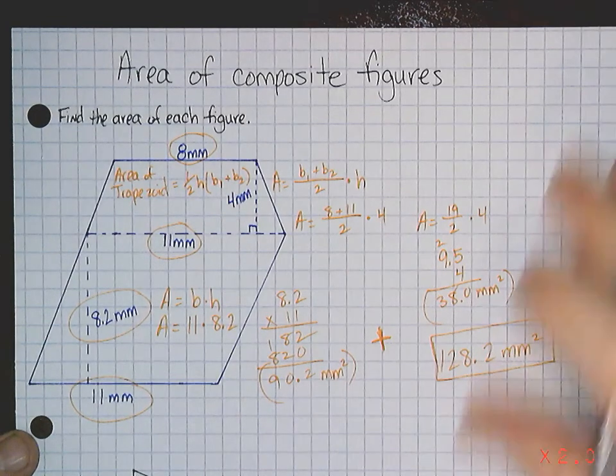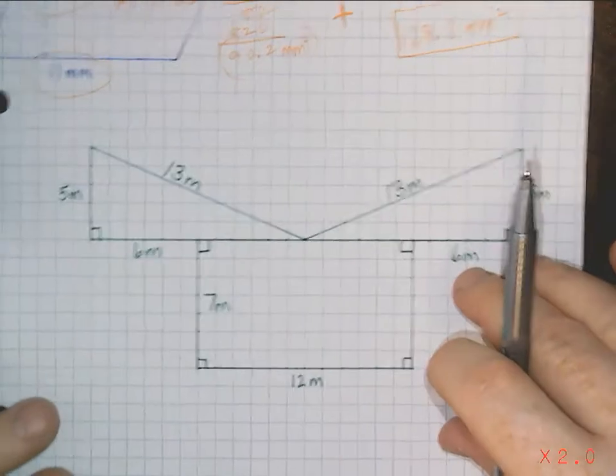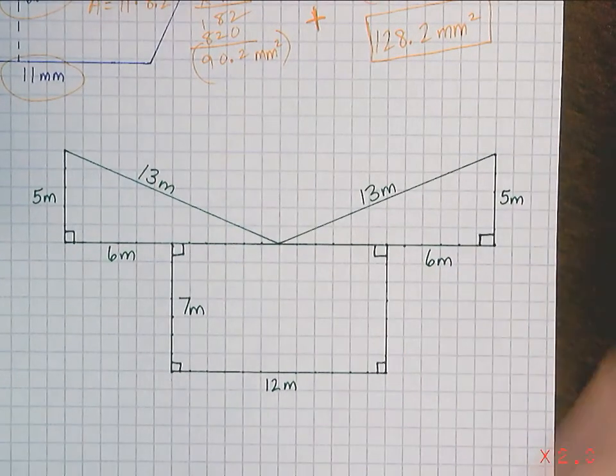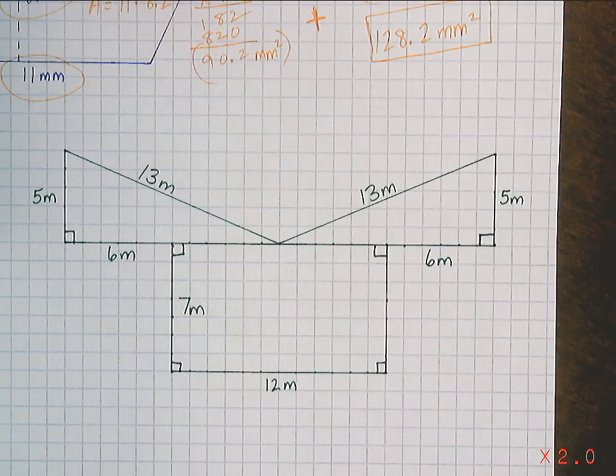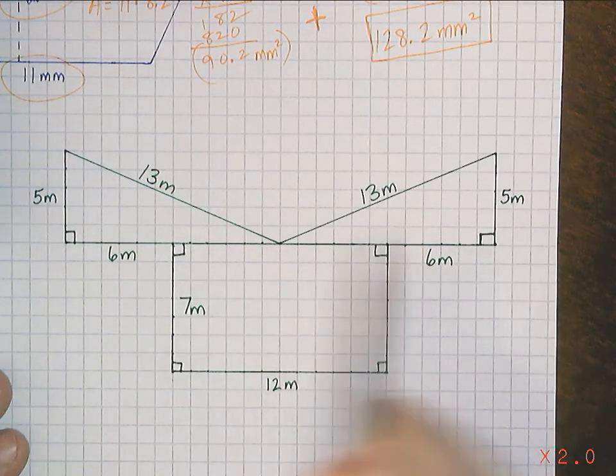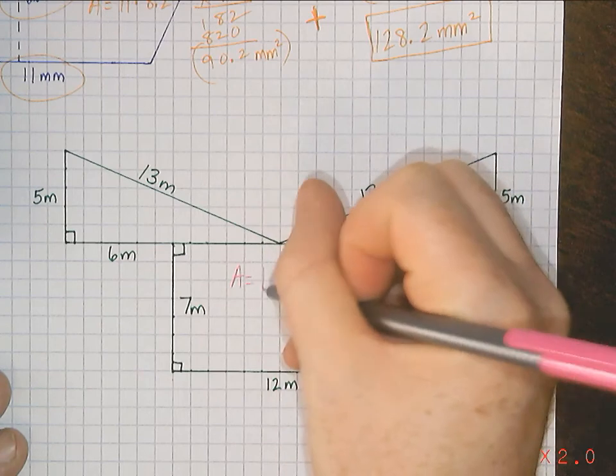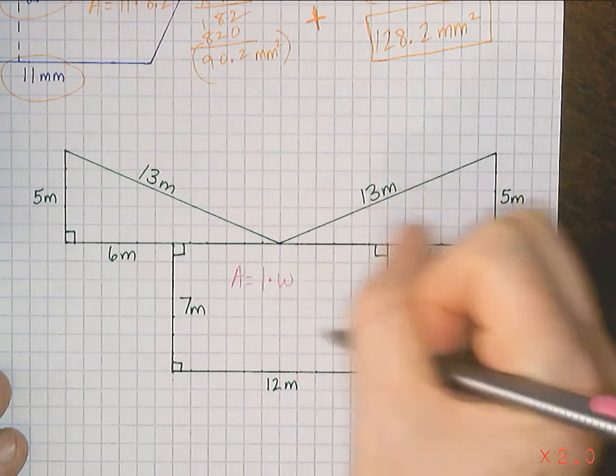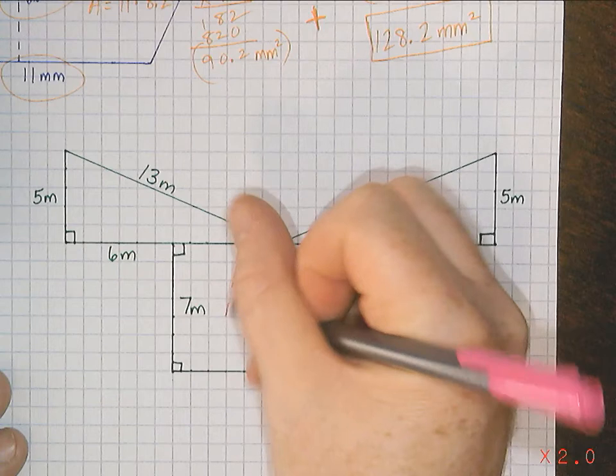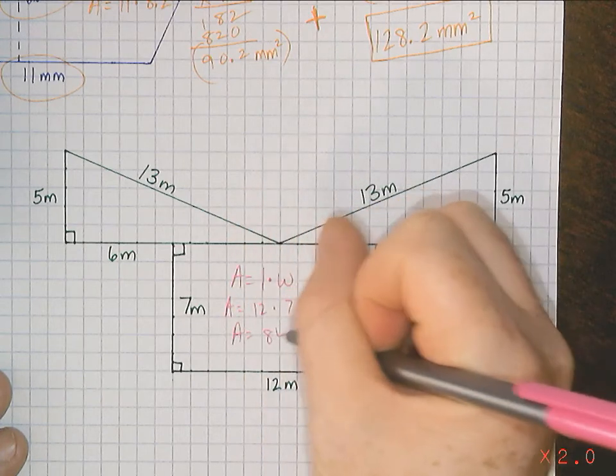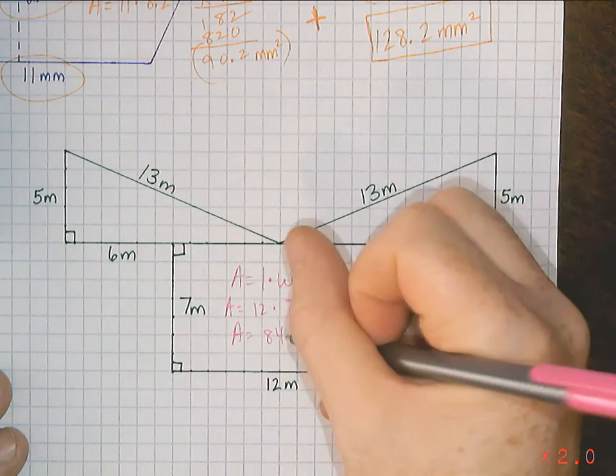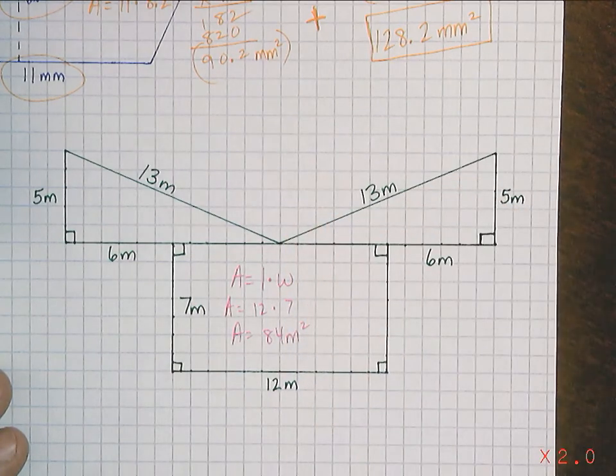Let's take a look at another example that you might also see in your book somewhere. For this one you've got two triangles and a rectangle. Two triangles and a rectangle. Rectangle is relatively easy. Area of rectangle is length times width. The length is 12, the width is 7, so your area is 84 meters squared.